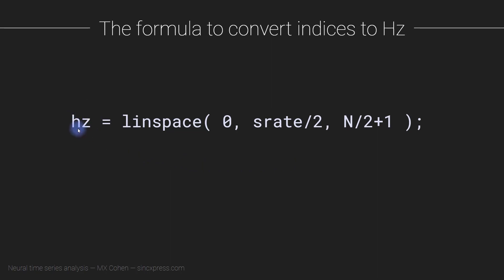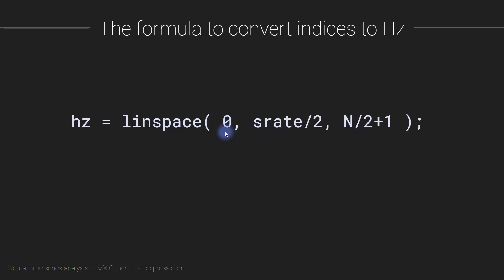The formula is: the vector of Hertz is linearly spaced numbers from zero to the sampling rate divided by two, in N divided by two plus one steps. The sampling rate divided by two is called the Nyquist frequency. So we go from zero to Nyquist, and the number of frequencies between zero and Nyquist is N/2 + 1, where N is the number of time points in the signal. The frequency resolution is therefore determined by the length of the signal. I'll discuss the N/2 + 1 quantity in a later video.